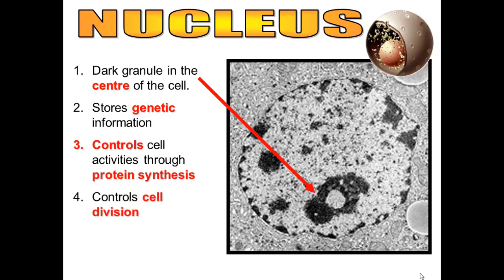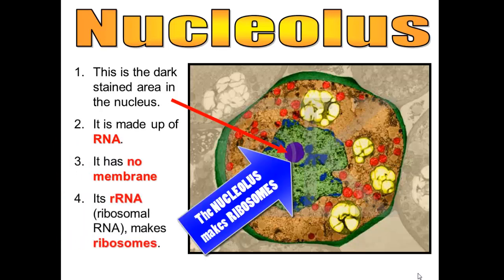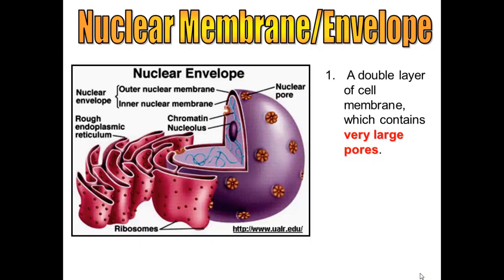The nucleus also controls cell division. The nucleolus, on the other hand, is sometimes confused with the nucleus. But the nucleolus is the dark center inside of the nucleus. It doesn't have a membrane, and it's basically made up of RNA — ribosomal RNA — which makes ribosomes. So the nucleolus makes ribosomes.